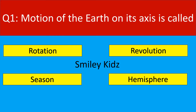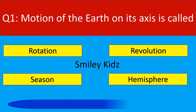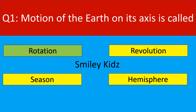Question number 1. Motion of the earth on its axis is called. Your options are rotation, revolution, season, hemisphere. Your time starts now. Your time is up and the correct answer is rotation. Motion of the earth on its axis is called rotation.